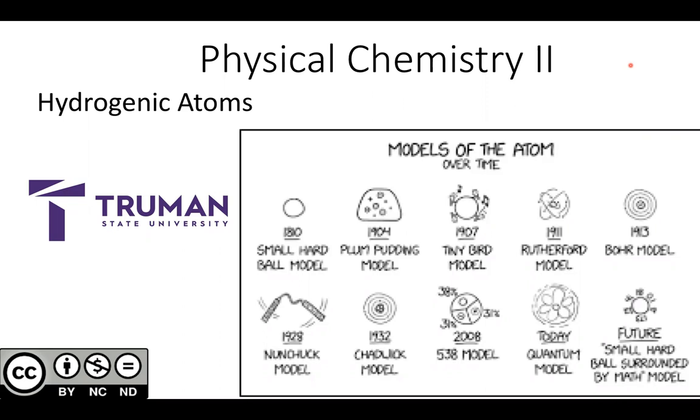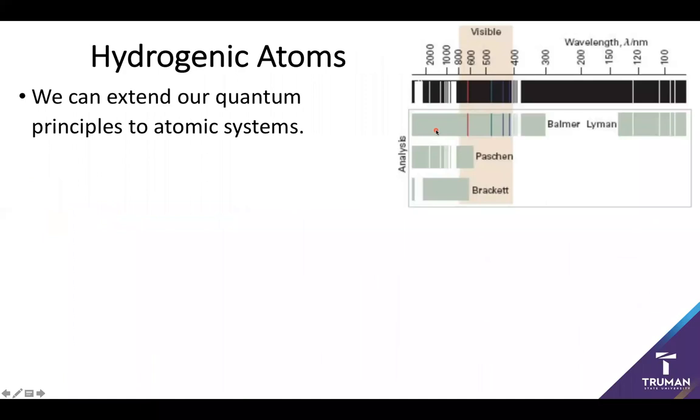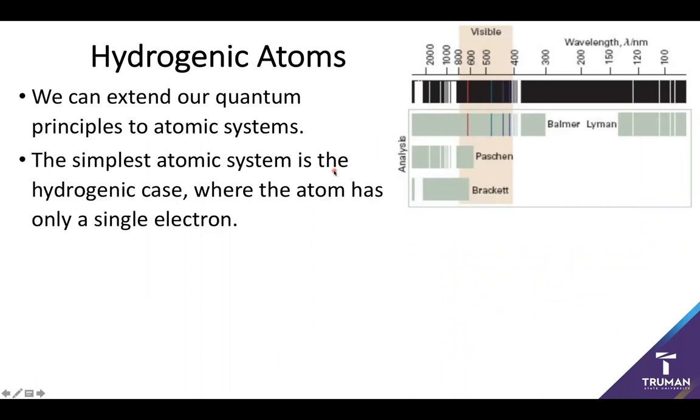We're going to specifically focus on a well-known set of systems called hydrogenic atoms. A hydrogenic atom is simply an atom surrounded by a single electron. This is a nice, simple case to study, mostly because we don't have to deal with the pesky nature of two very small, fast electrons interacting with each other.